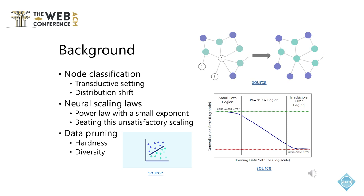In node classification tasks, it is commonly the case that there is one large graph and both the training and test nodes are accessible. The huge difference lies in that it is possible to exploit the test nodes in selecting helpful training nodes during the training phase of a machine learning pipeline, even though the labels of test nodes are unavailable at that point. Both theoretical and empirical results show that in some general cases, the performance of a deep neural network scales with the number of training examples under a power law. Unfortunately, this power law scaling often possesses a very small exponent, implying an unsatisfactory sample efficiency.